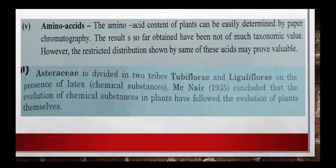Amino acids को easily determine किया जा सकता है paper chromatography के द्वारा, और यह हर plants में पाए जाते हैं। लेकिन अभी तक बहुत ज्यादा इनकी taxonomic value नहीं है, कभी-कभी इनका distribution restricted होता है तो इनको important माना गया है। Asteraceae की दो tribes, Tubiflore और Liguliflore, latex जो chemical substance है उसके आधार पर divide किया गया। इस तरह से chemical components - चाहे secondary या primary metabolites हों, oils हों, different pigments हों - इनके आधार पर phylogenetic classification में help मिलती है।